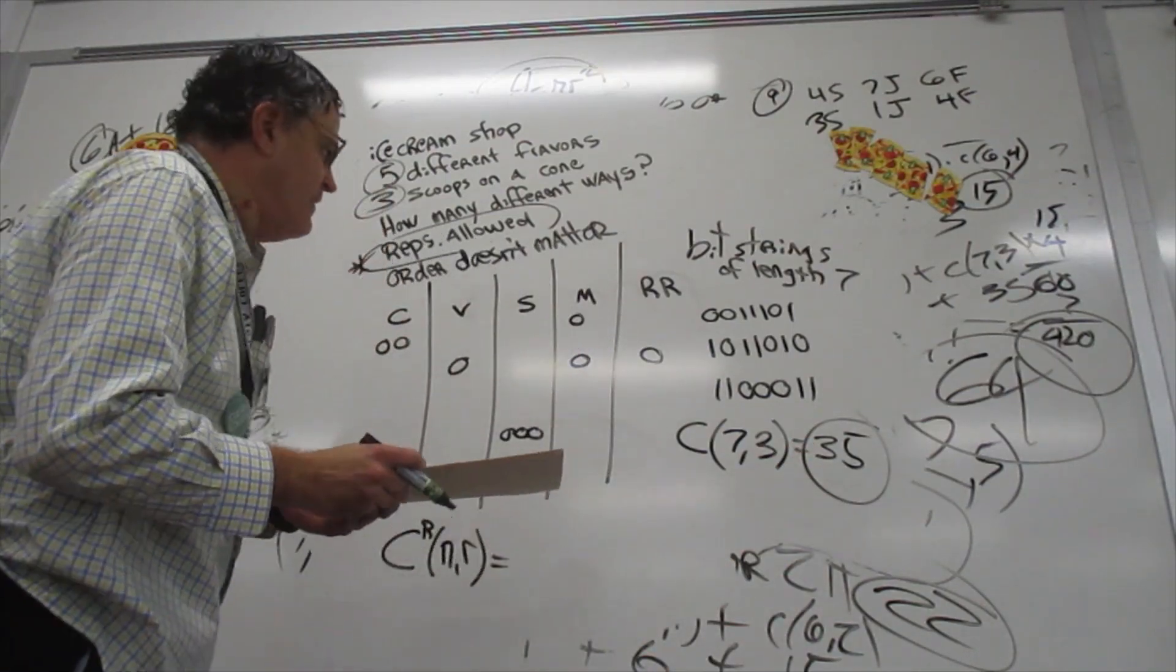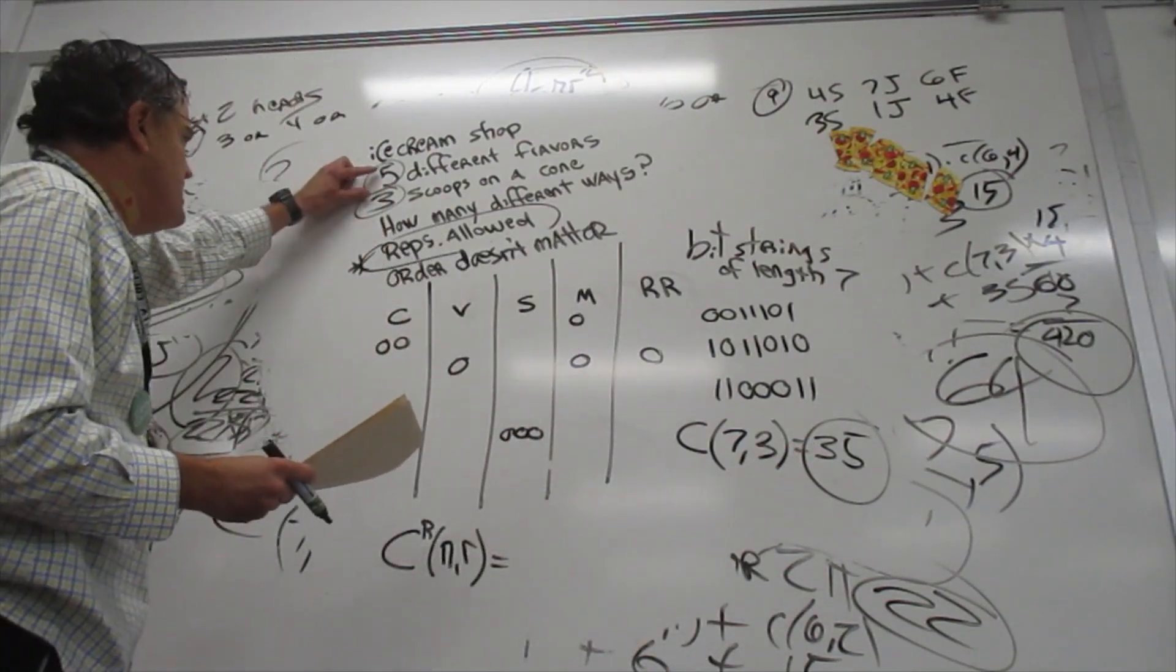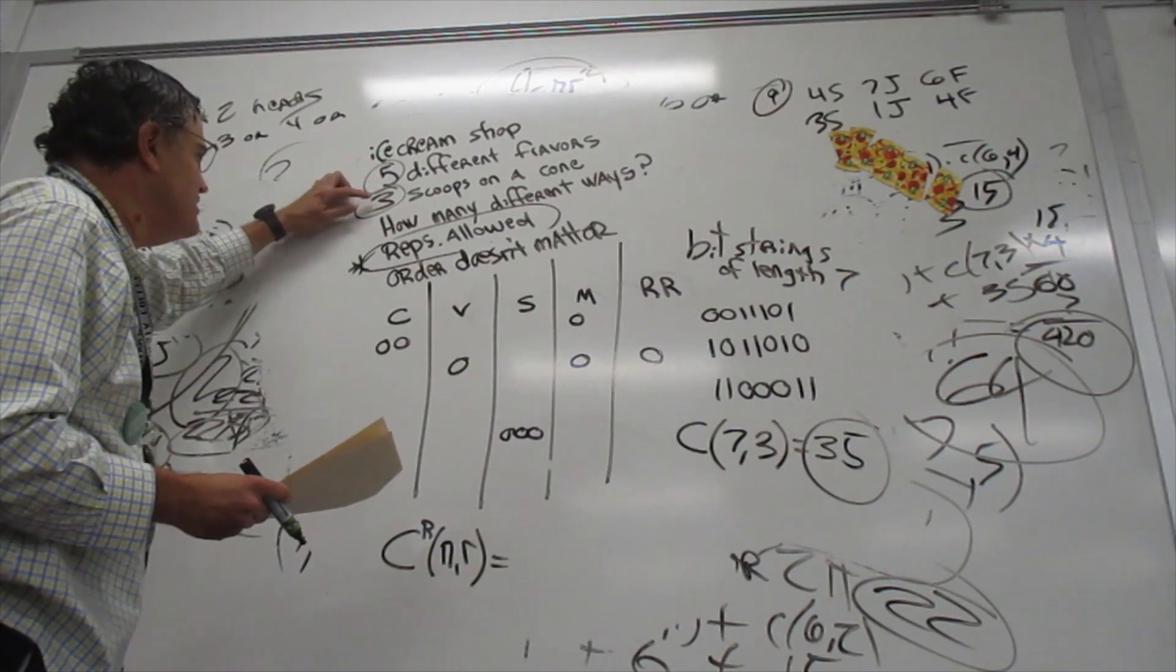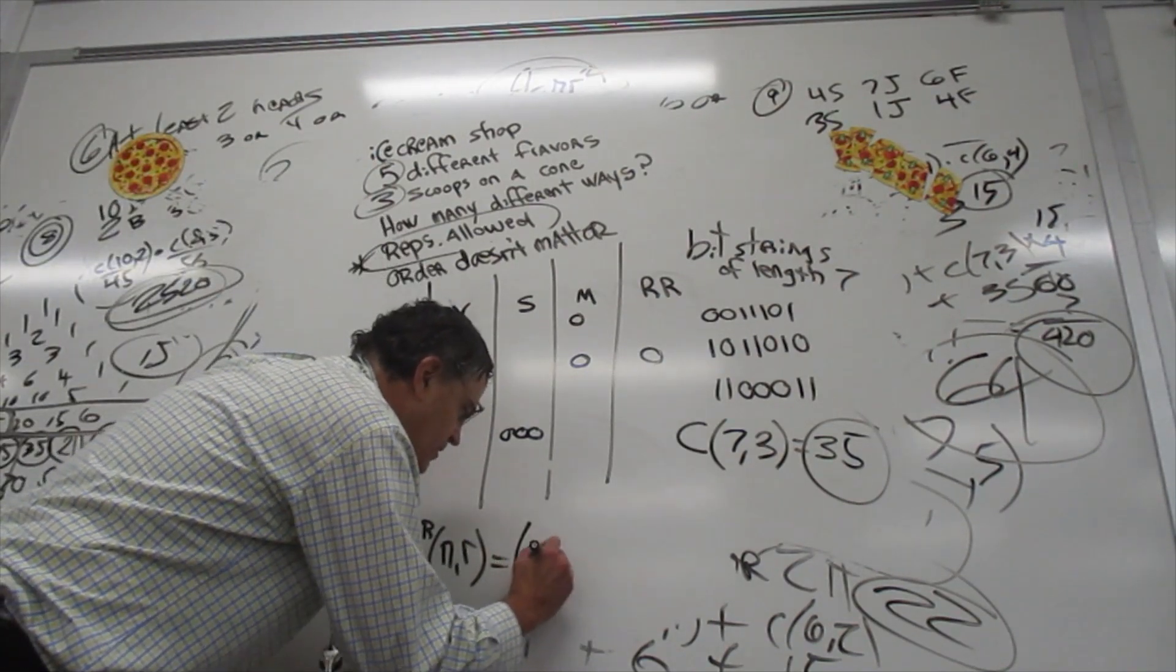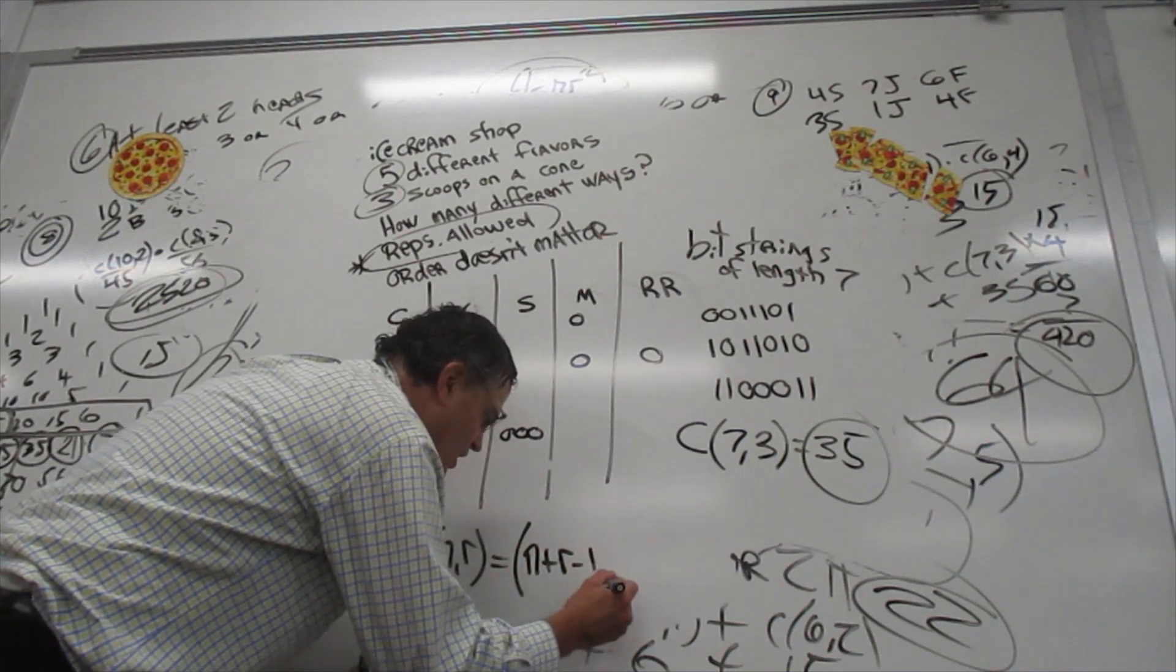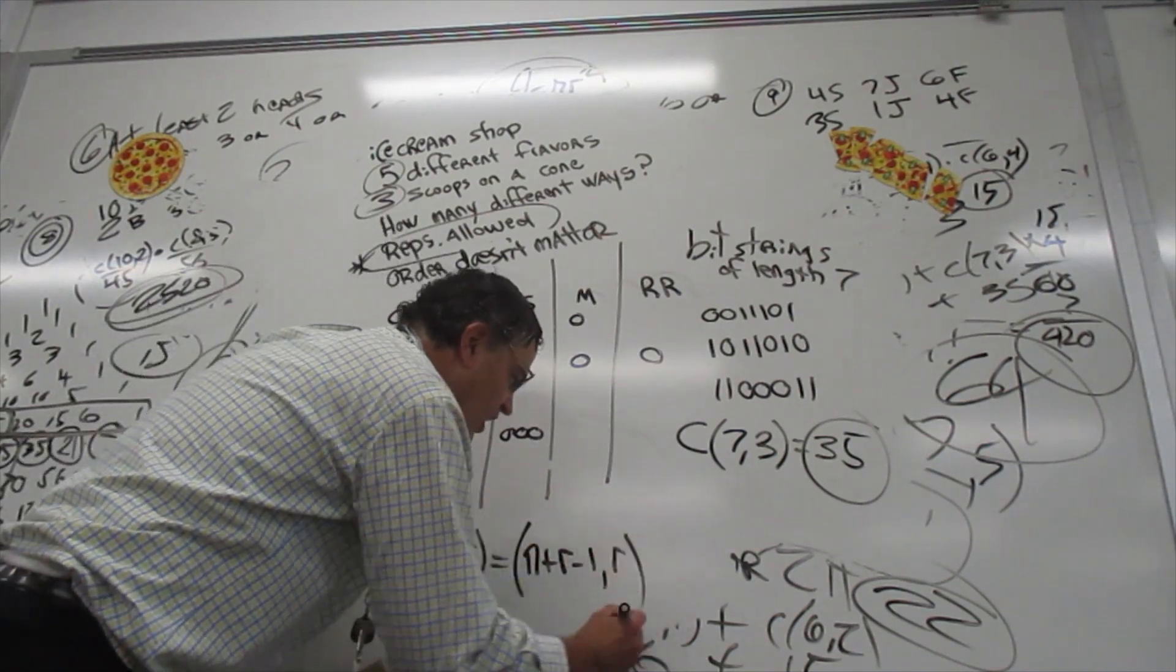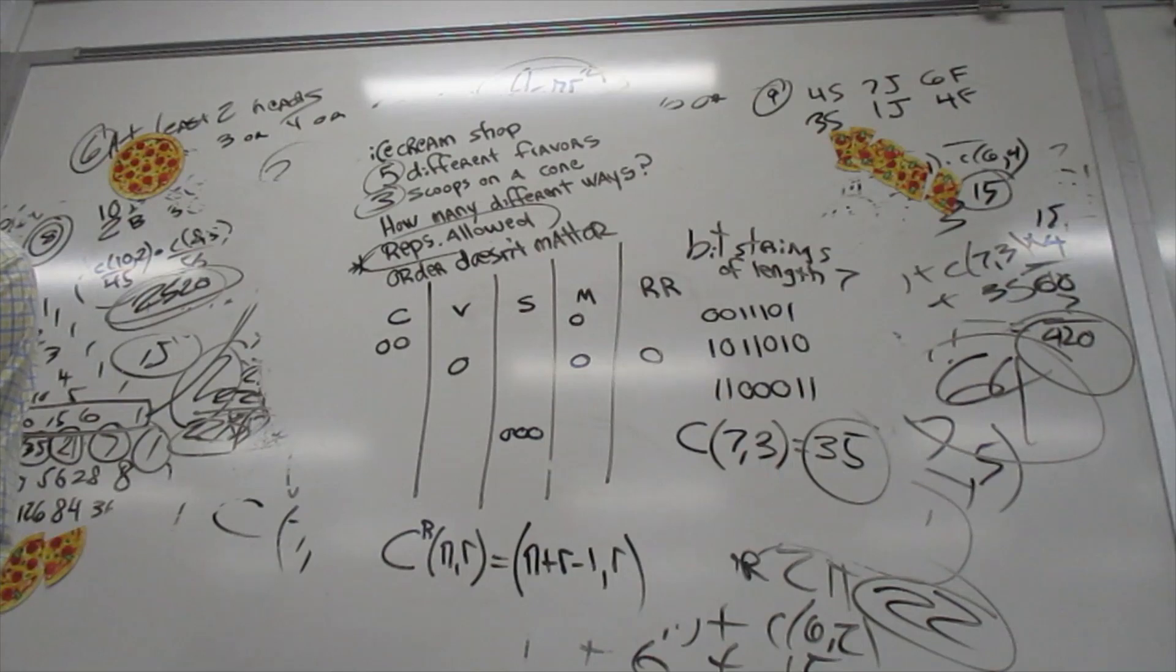So the formula is going to be you add those numbers together. 5 plus 3 is 8 and subtract 1. The formula is n plus r minus 1 choose r. And if you have that formula down, you can do a problem with 8 scoops on the cone.